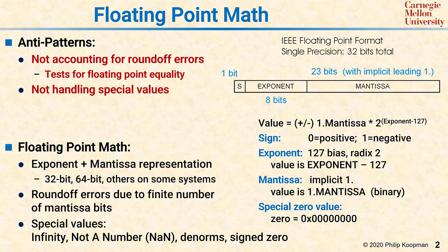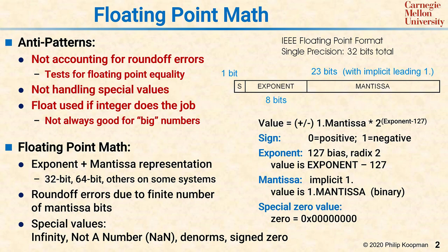Despite the fact that floating-point numbers have this exponent that lets you represent big numbers, sometimes that's the wrong choice and you should be using an integer instead.